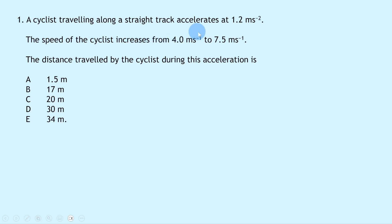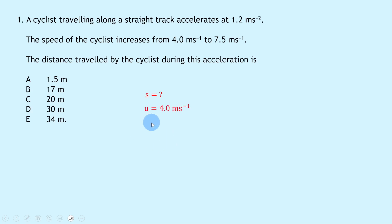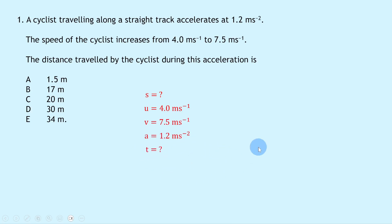Question 1 says a cyclist travelling along a straight track accelerates at 1.2 metres per second squared. The speed of the cyclist increases from 4.0 metres per second to 7.5 metres per second. The distance travelled by the cyclist during this acceleration is... We should be thinking about equations of motion, writing down SUVAT where we're trying to find the distance or displacement S. U is 4.0 m/s, V is 7.5 m/s, A is 1.2 m/s², and T is unknown. We need the equation that doesn't have T: V² = U² + 2AS.